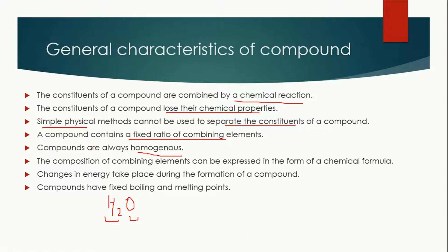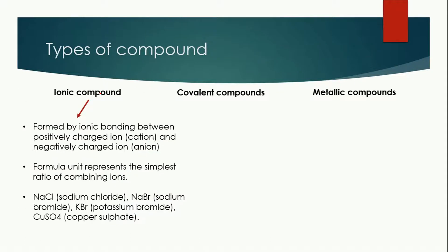The composition of combining elements can be expressed in the form of a chemical formula — for example, water is expressed as H₂O. Energy changes take place during the formation of a compound; whenever hydrogen and oxygen combine, some type of energy change occurs. The compounds also have fixed boiling and melting points — for example, the boiling point of water is 100 degrees Celsius.